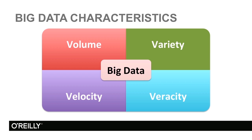Variety is another component. Traditionally, businesses generate transactional data, but now with users being on the internet, users generate a tremendous amount of data — images, text, videos — and we need to process all of that.